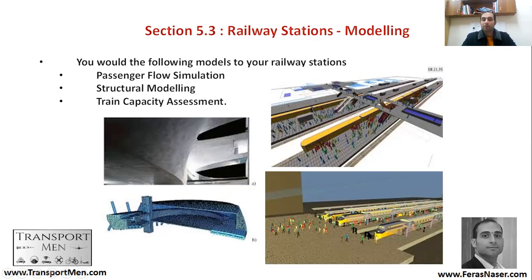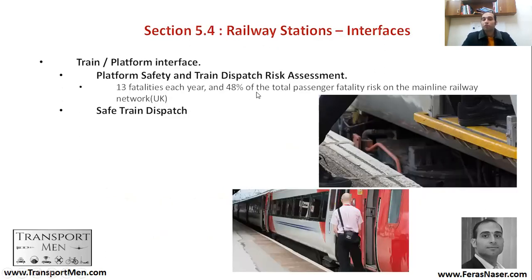Sometimes you would do a train capacity assessment — how many trains can run, every five minutes or every ten minutes. One key area of focus is the train-platform interface, which is a very dangerous interface responsible for 30 fatalities each year and 48% of the total passenger fatality risk. So it is an important safety hazard. We need to design for the stepping distance between a platform and a train — this is one of the key criteria. We also need to think about safe dispatching of trains, with a dispatcher looking at the platform to ensure no passengers are at risk before signaling the driver to start the journey.